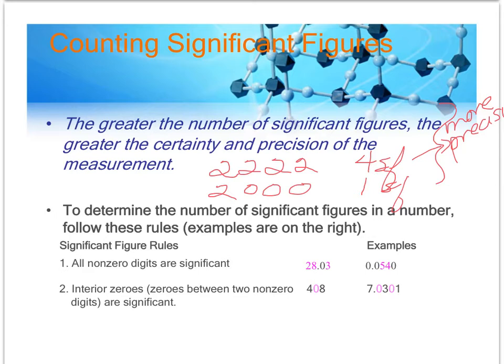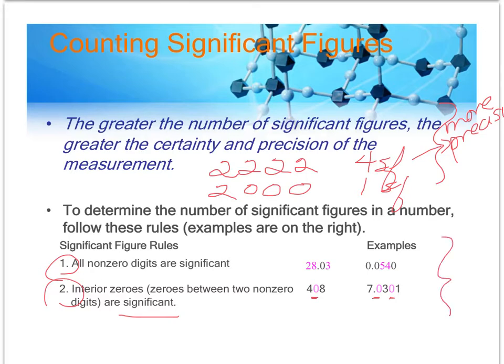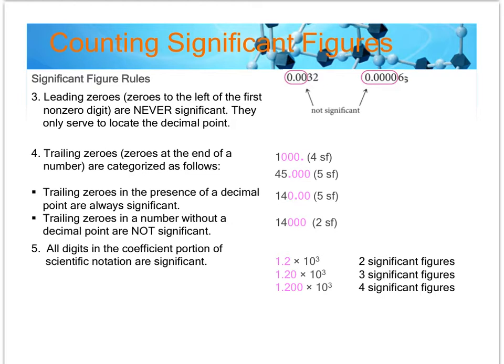There are a few rules you need to know for sig figs — write these down on a note card, because they'll be really important in this class and lab throughout the next semester. First: any number that is not a zero is automatically significant. Second: zeros that are sandwiched in between non-zero numbers, regardless of whether they're to the right or left of the decimal, are significant.